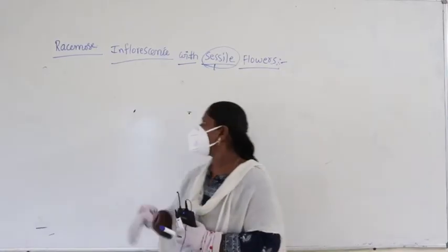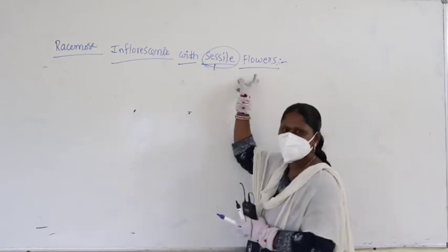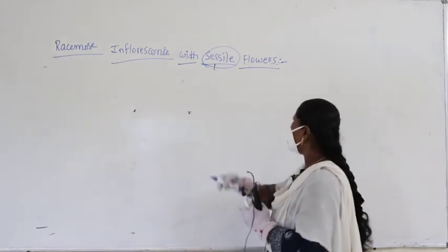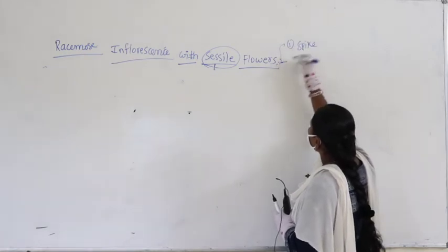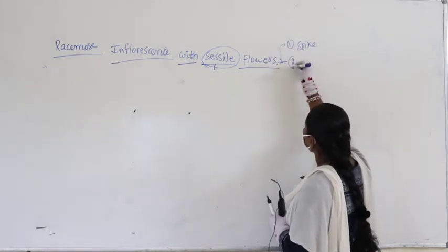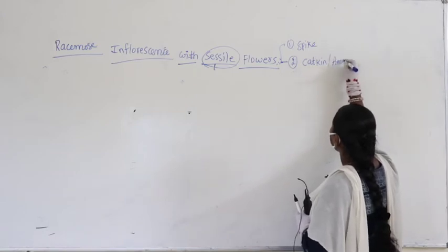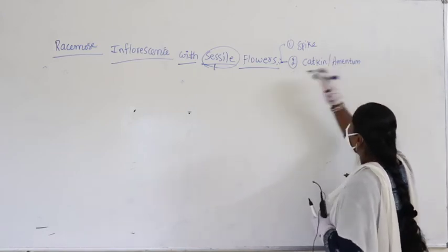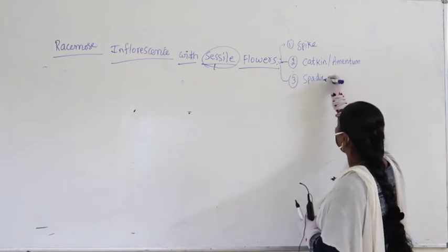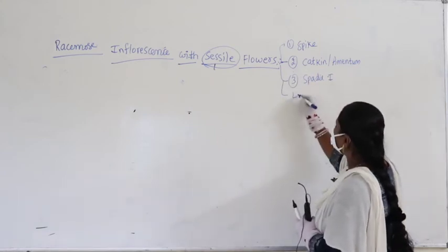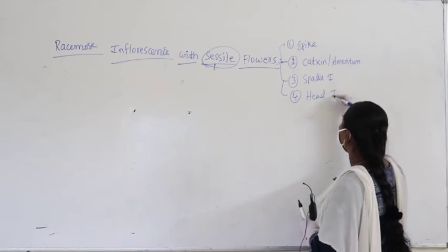Now, let us continue with the same concept of racimose inflorescence with sessile flowers. Altogether, we have discussed so far: the first one is the spike, followed by the second one, catkin, also called as amentum, and the third one is referred to as spadix inflorescence. Now we were on the fourth one — let us continue our discussion with head inflorescence.